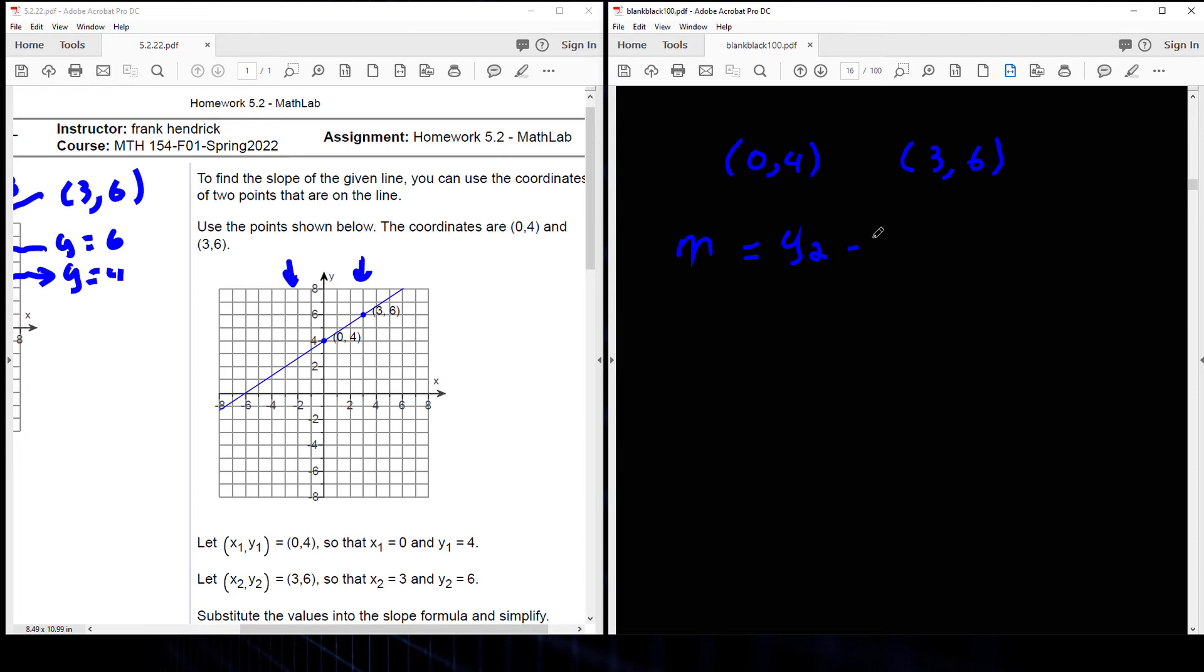Y2 minus y1 divided by x sub 2 minus x sub 1. So I have to write out my formula. Now I'm going to assign values to my variables. So this will be my x sub 1, and that will be my x sub 2. This will be my y sub 1, and that's my y sub 2. So I wrote out my formula. I assign values to my variables.